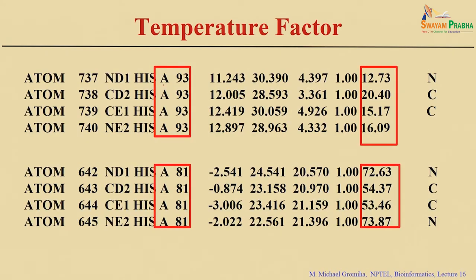Here you can see HIST-93 ND1 and CD2 — the B factor values are around 12, 15, or 16, meaning these atoms are rigid. In contrast, for HIST-81 ND1 and CD2, the values are more than 50 — say 72 or 73 — indicating these atoms are highly flexible with very high B factors.